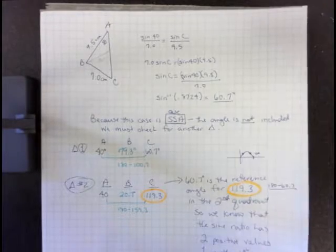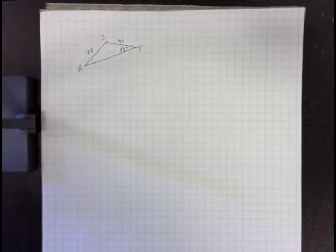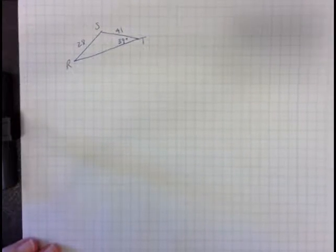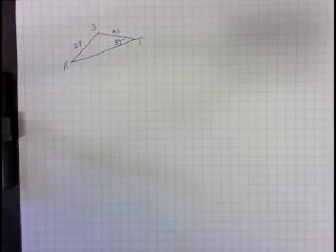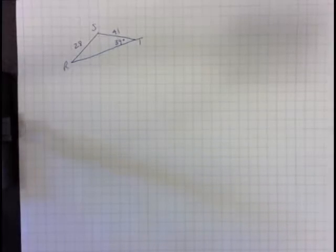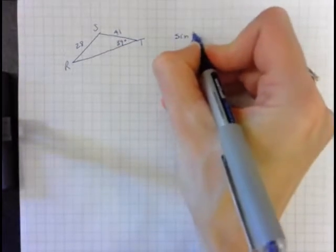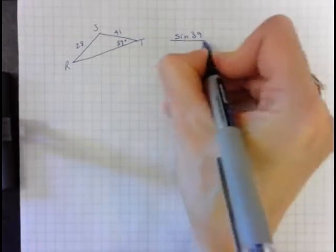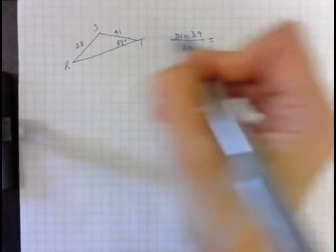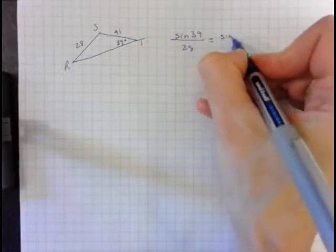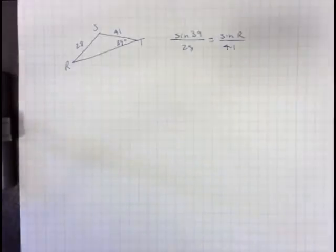So I'm going to do one more for you. Now this triangle is pretty clear, right? I know that I can use the Law of Sines. So I know that my sine of 39 over 28 equals—now I know I have to find r—the sine of r over 41.